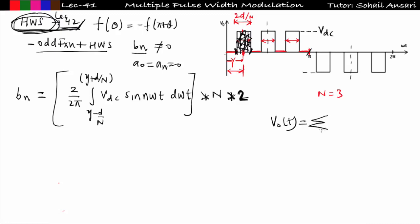From this we can write v₀(t) = summation over n = 1, 3, 5, ... to infinity of bn × sin(nω₀t). This is the complete Fourier series expression. Since a0 and an are zero for half-wave symmetry, and there are no even harmonics present in half-wave symmetry — I will explain this in Lecture 42.